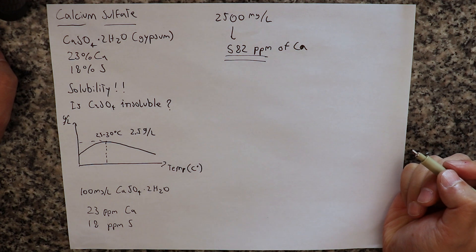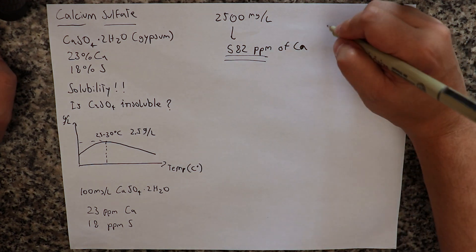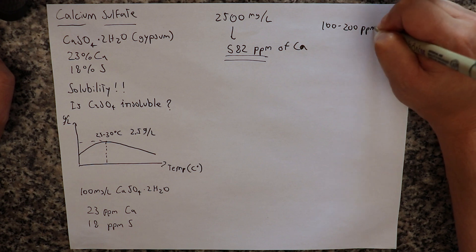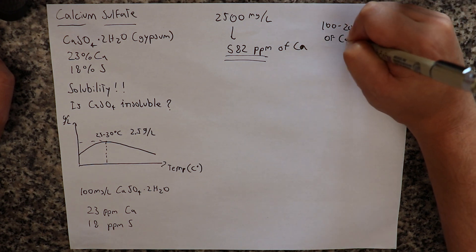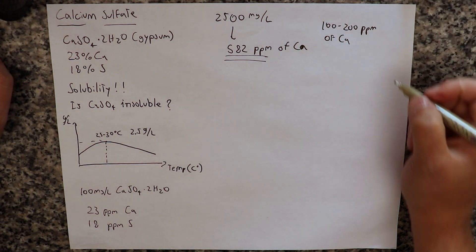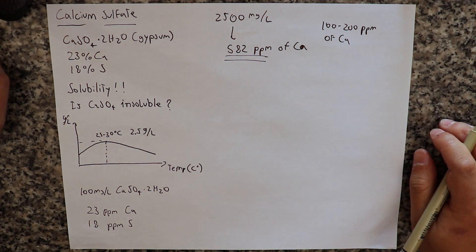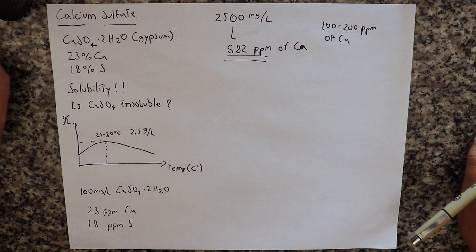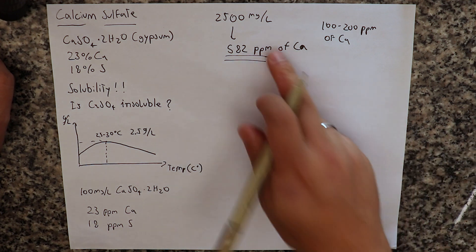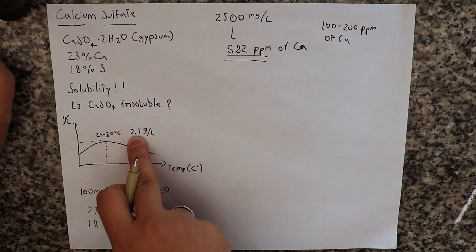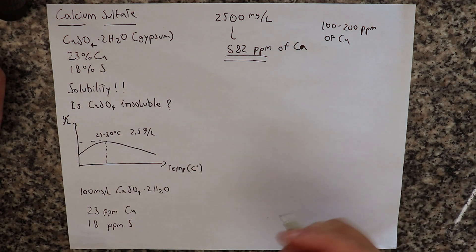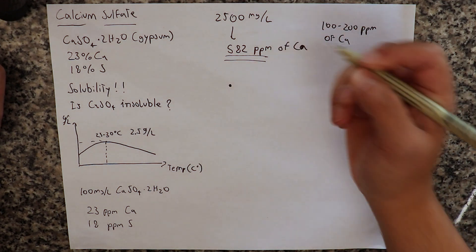Now if we think about the fact that most plants require 100 to 200 ppms of calcium, then this means that we can provide the entire plant need of calcium from calcium sulfate if we wanted to. However, because the solubility is only 2.5 grams per liter, this means that we cannot prepare concentrated solutions of calcium sulfate.